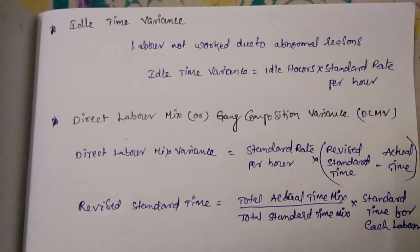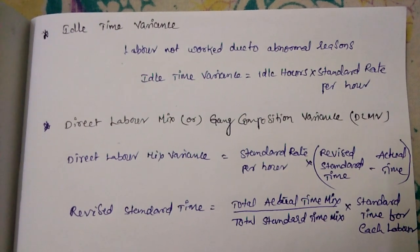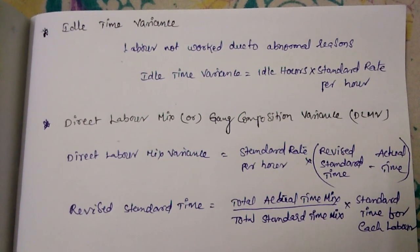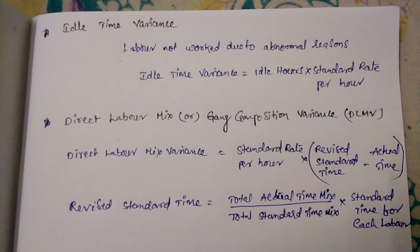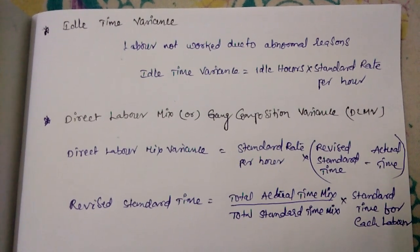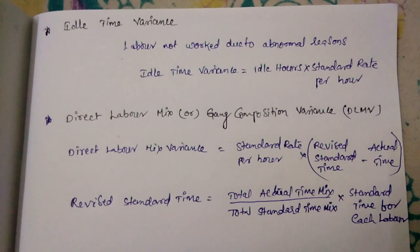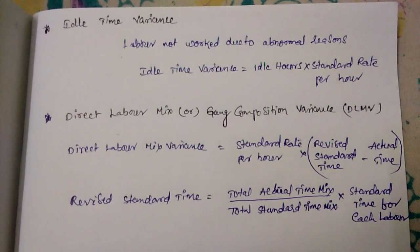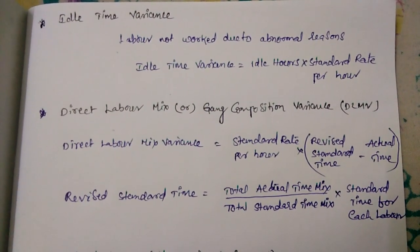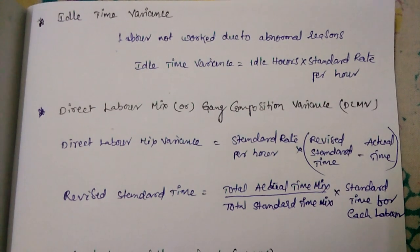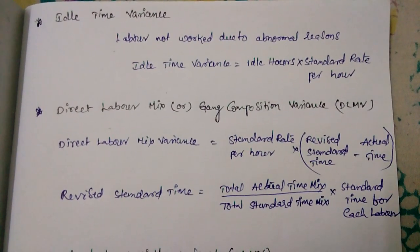Idle Time Variance arises when labor does not work due to abnormal reasons such as power cut-off, absenteeism, or other specific reasons. Idle Time Variance equals idle hours multiplied by standard rate per hour.